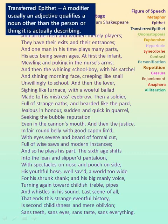Now let us see transferred epithet. A modifier, usually an adjective, qualifies a noun other than the person or thing it is actually describing. 'Woeful ballad' — ballad refers to a slow sentimental song which is woeful, that is an unhappy song. Actually, the songs are not unhappy, but the man here is unhappy. So the quality of the word gets transferred. Hence, it is transferred epithet.